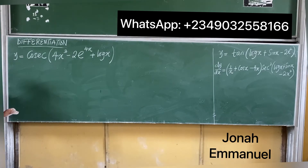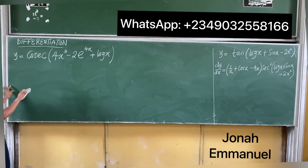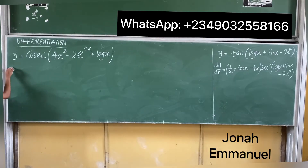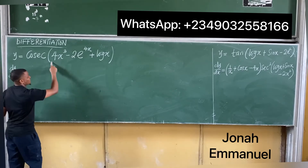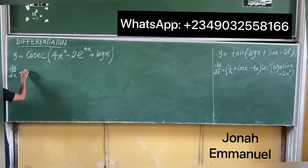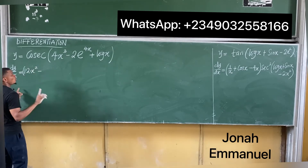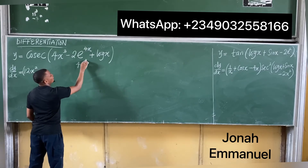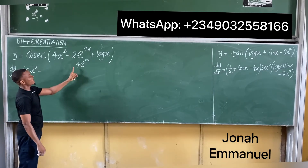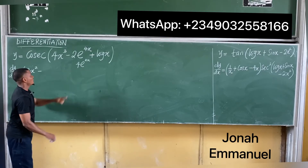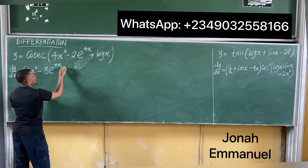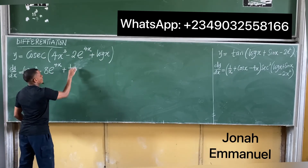Now for this next case — without going to the log process, let u equal the bracket term, then du/dx: differentiating the bracket gives 12x² minus — differentiating e^(4x) gives 4e^(4x), but there's a 2 here, so 2 × 4e^(4x) = 8e^(4x) — minus 8e^(4x), plus differentiating log x gives 1/x.